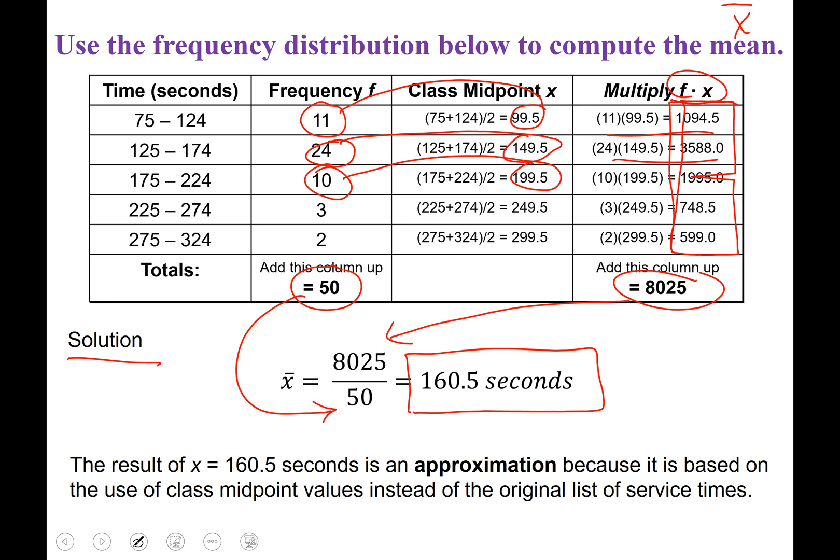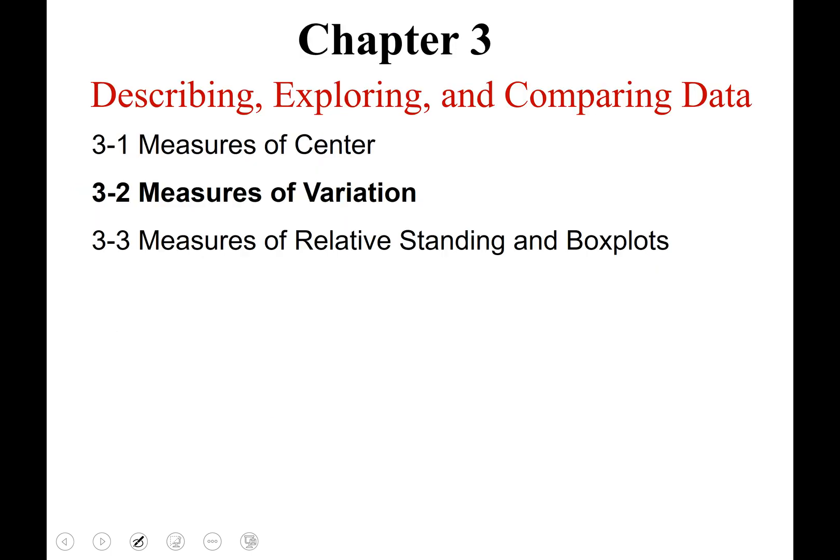Okay, so the result of x-bar equals 160.5 seconds. It is an approximation because it was based on the use of class midpoints instead of all the individual service times. But nonetheless, you are given a frequency distribution table and you are asked to find the mean. You'll want to refer to this slide and practice going through this process. And that will finish our discussion on Section 3.1, Measures of Center. I'm Jamie Aimee, and I'll see you next time for our discussion on Section 3.2.